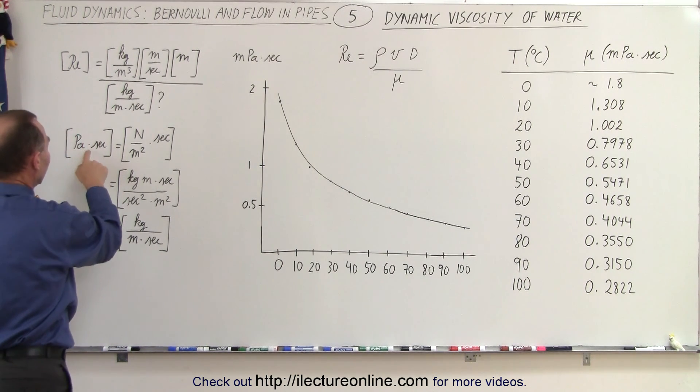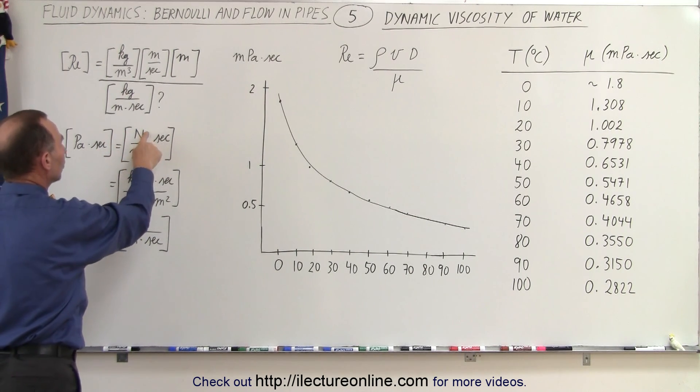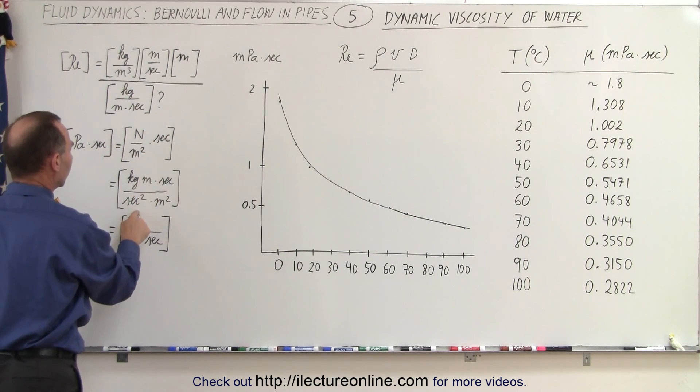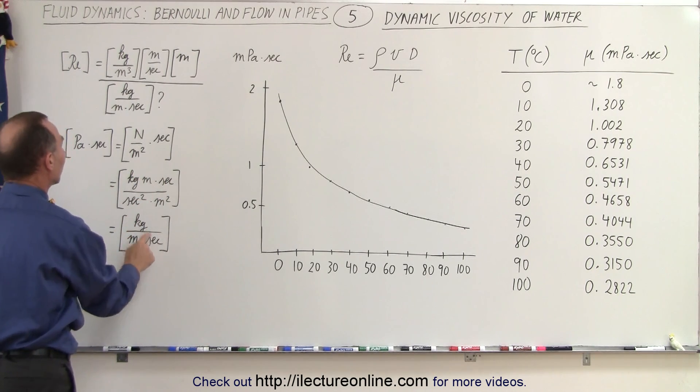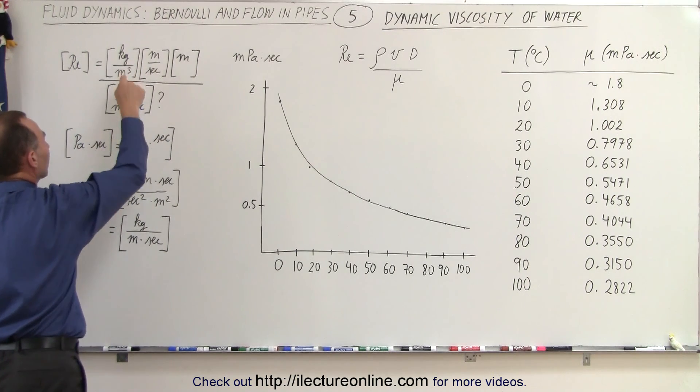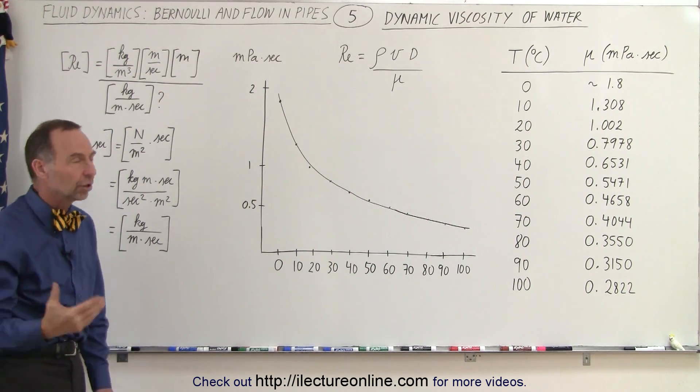Well, notice pascals times seconds is newtons per square meter times seconds. And a newton is a kilogram meter per second squared. If we simplify all that, indeed, we get kilograms per meter times seconds, which means that the numerator units and the denominator units will cancel out and the Reynolds number is unitless.